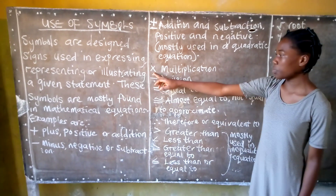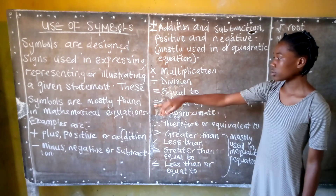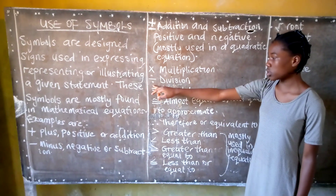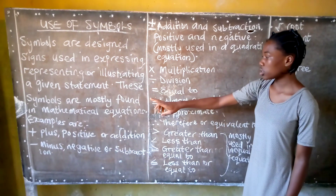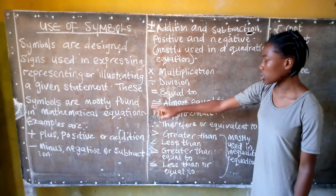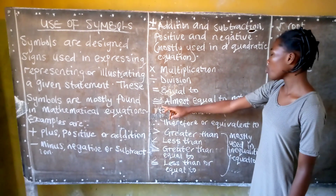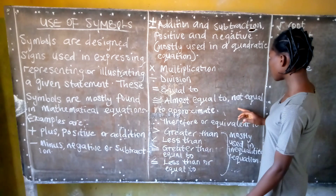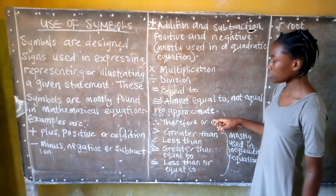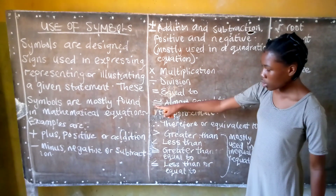We have the multiplication sign, the division sign, the equal to sign, the almost equal to, or not equal to approximate sign.